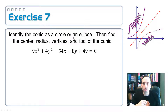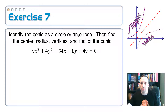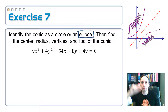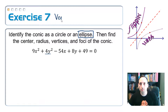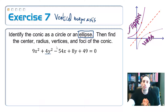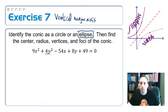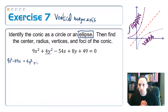Let's apply these three steps to put this equation into standard form. First, identify it: I have a 9x-squared and a 4y-squared — different coefficients, so this is an ellipse. Since the y-squared has the smaller coefficient, it gets the longer axis; y-squared is vertical, so this has a vertical major axis — just by looking at the equation, without any math yet. Now separating: 9x² − 54x plus 4y² + 8y equals negative 49.